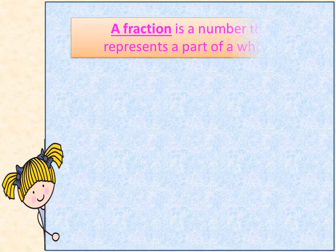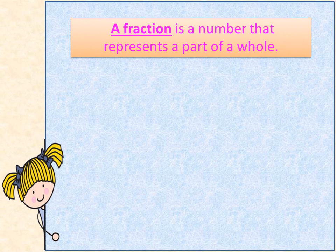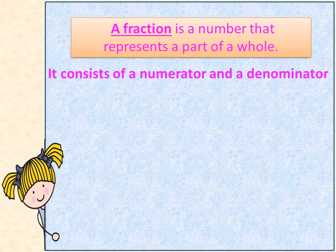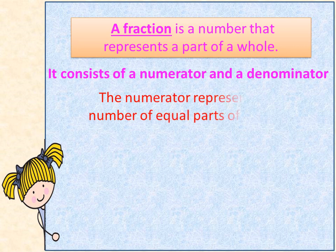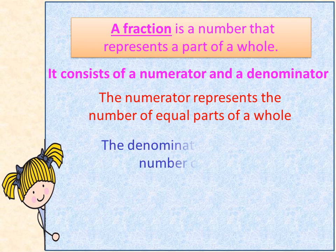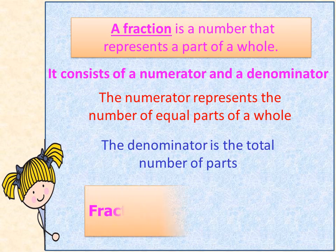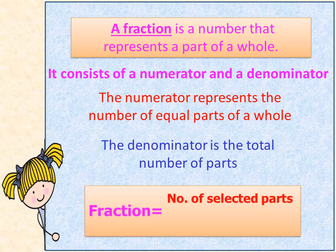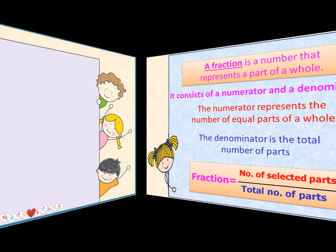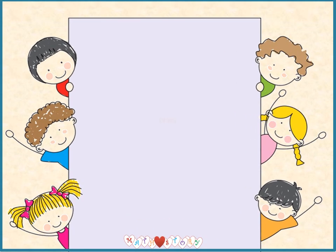A fraction is a number that represents a part of a whole. It consists of a numerator and a denominator. The numerator represents the number of equal parts of a whole. The denominator is the total number of parts. The fraction equals the number of selected parts over the total number of parts.